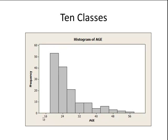Let's look if we change the number of classes. Now this histogram has 10 classes. And we can count the bins: 1, 2, 3, 4, 5, 6, 7, 8, 9, 10. We have 10 classes here.